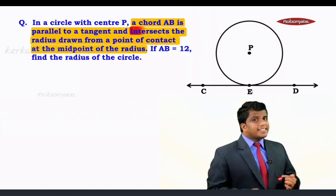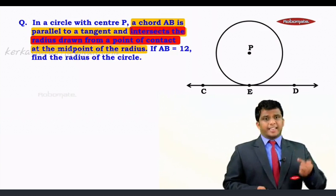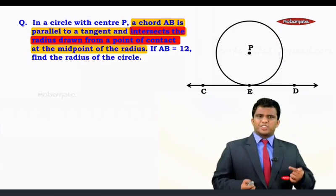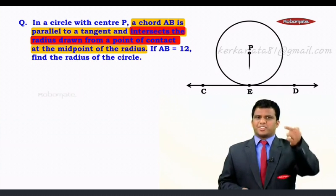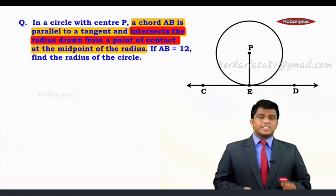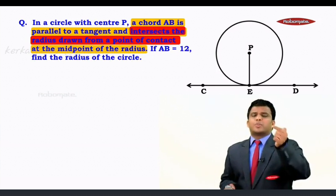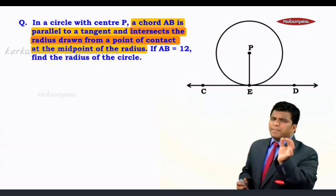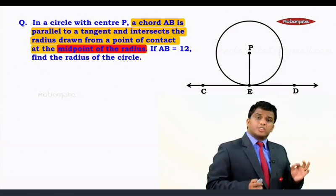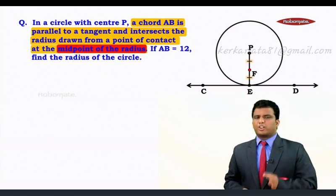Now this chord AB will intersect one more segment which is the radius. But that radius has to be drawn through the point of contact. So let's draw segment PE as the radius. And the chord AB has to intersect the radius at the midpoint of the radius. So let's take F as the midpoint of the radius PE.